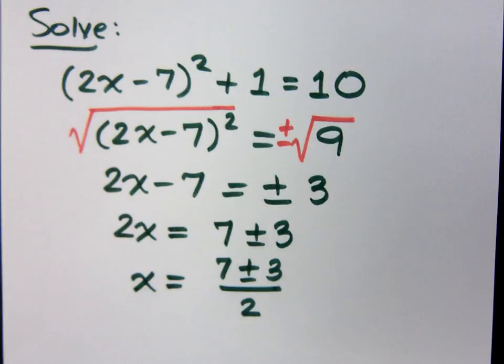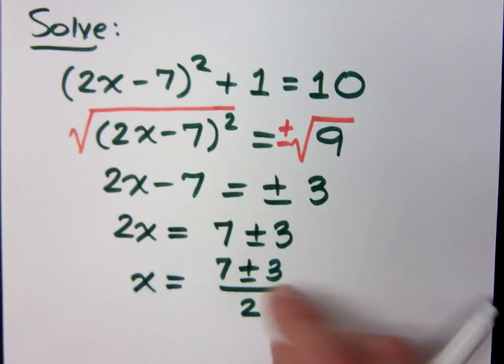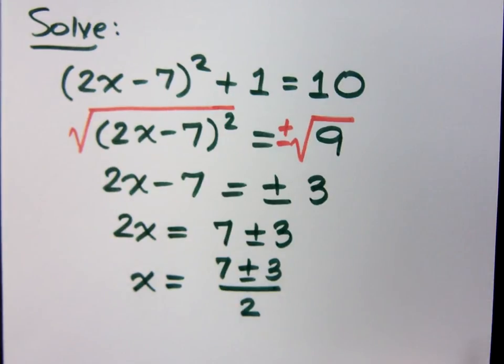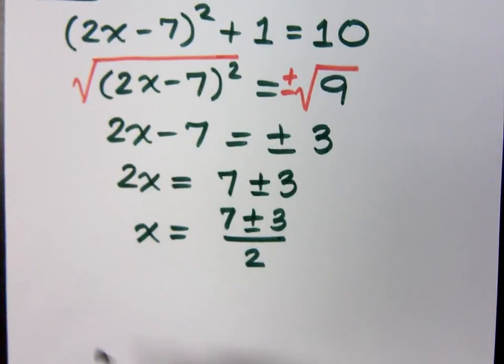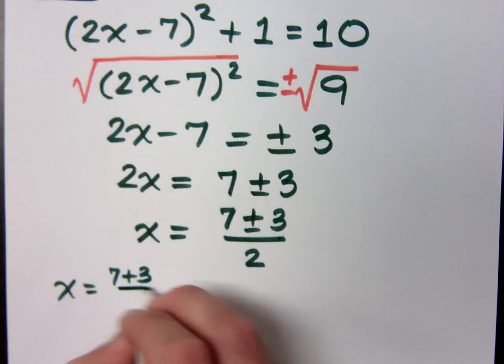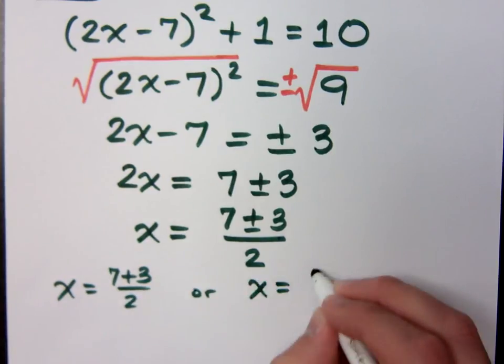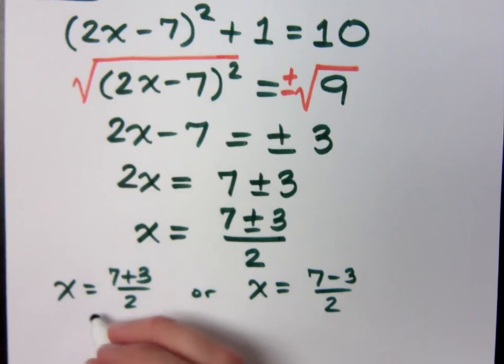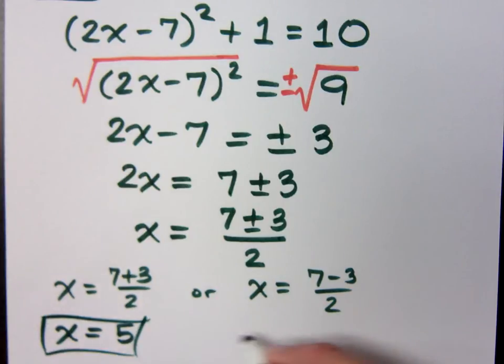Am I done? No. Notice that if I didn't have the minus here, I just had 7 plus 3 over 2. Can I do more with that? I can, so I've got to separate this. So I get x equals 7 plus 3 divided by 2, or x equals 7 minus 3 over 2. So what do I get with 7 plus 3 over 2? x equals 5, or x equals what? 7 minus 3 is 4, divided by 2 is 2.